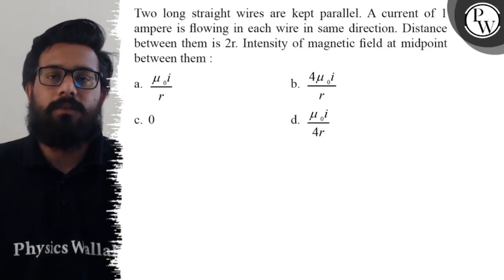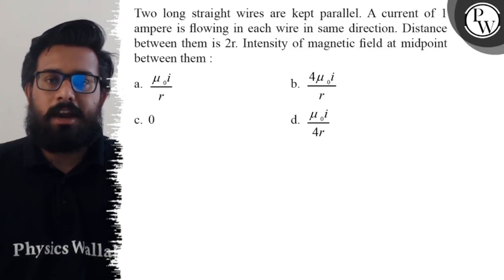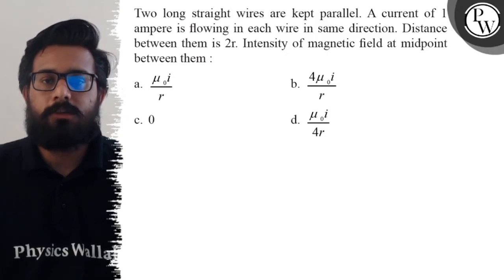Your first option is μ₀i upon r, your second option is 4μ₀i upon r, your third option is zero, and the fourth option is μ₀i upon 4r.